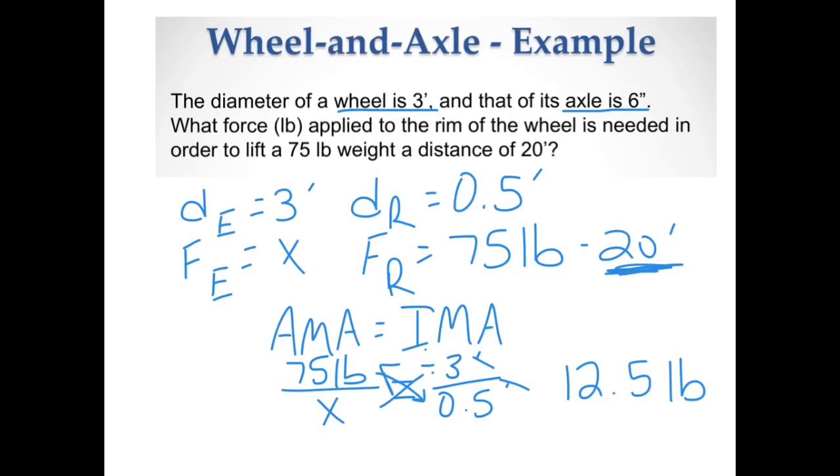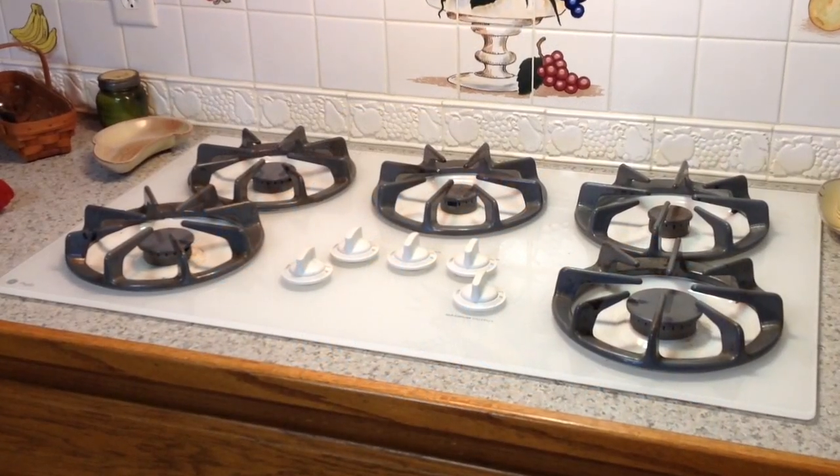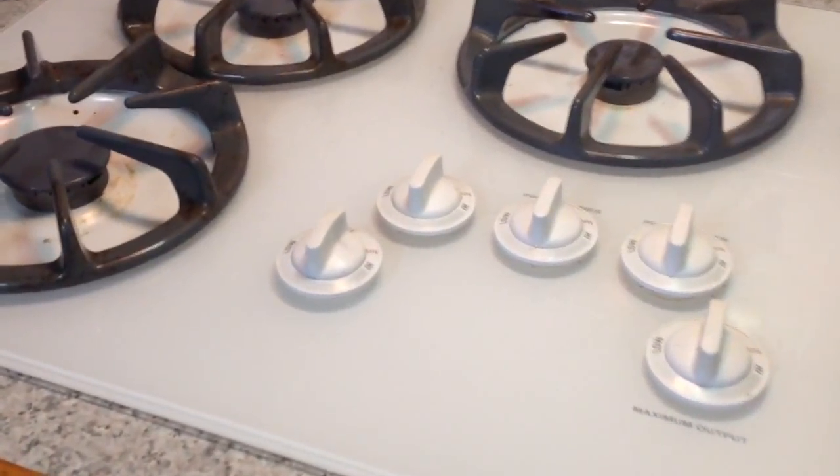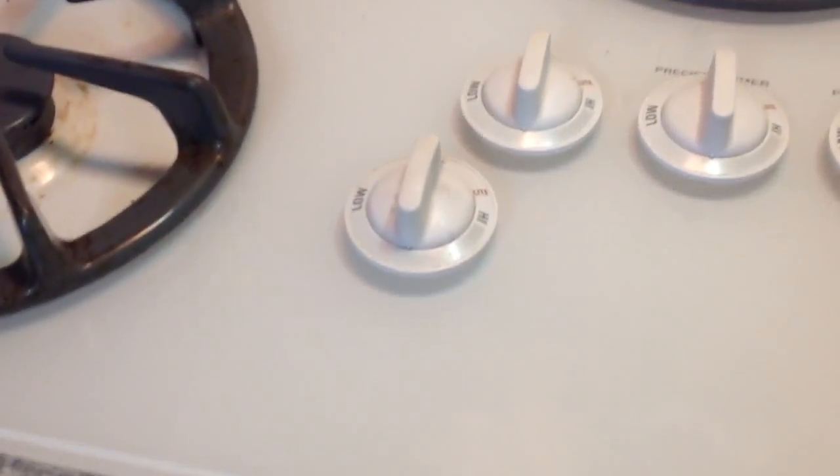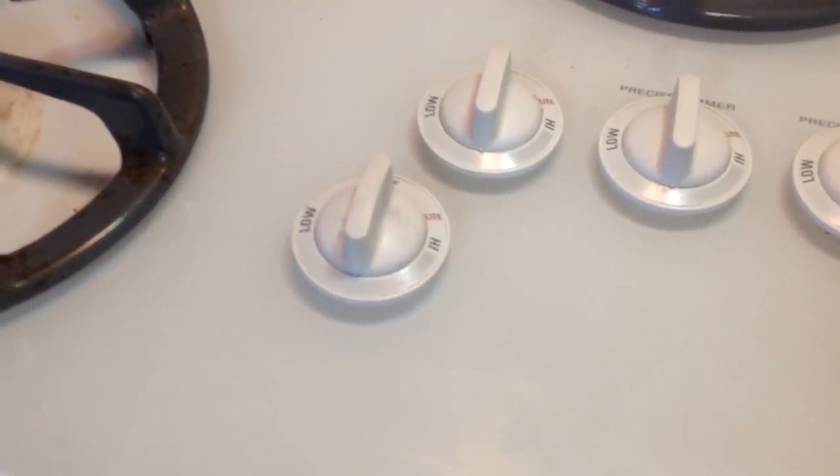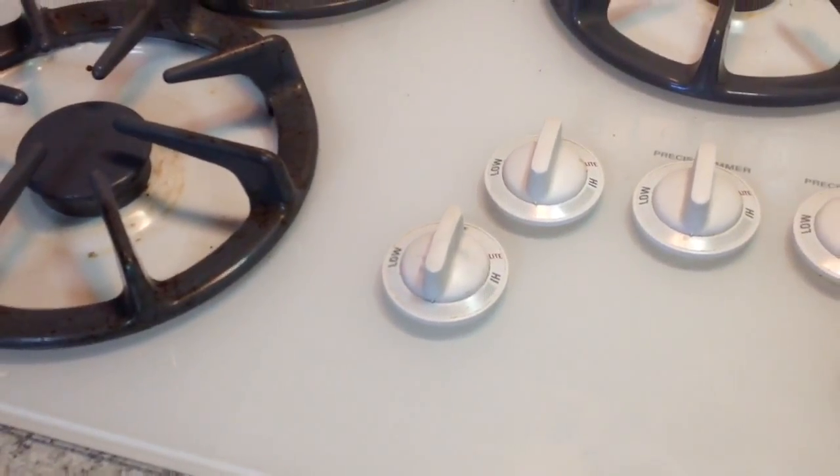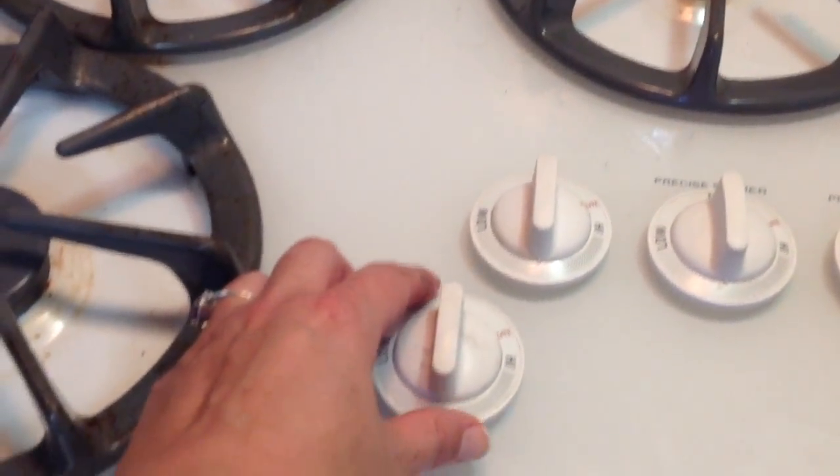Now it's time to see what I can find in the kitchen. In the kitchen here, it's another great example of a simple machine. I'm going to look at the wheel and axle. I'm going to be looking at this knob. The knob itself is your wheel.